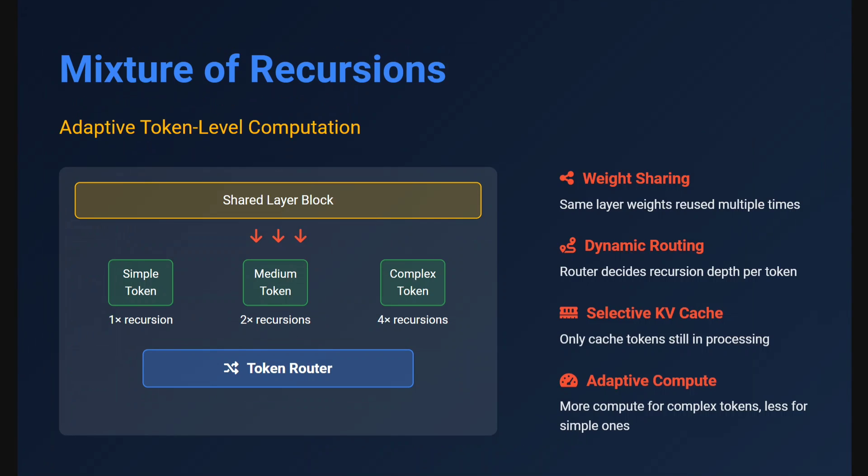Weight sharing happens because you reuse the same layer weights multiple times. Dynamic routing: the router decides the recursion depth per token — a neural network called the token router determines how many times recursion should happen for a given token. Selective KV cache: only cache KV pairs for tokens still in processing. For example, with three tokens — one simple taking one recursion, one medium taking two, one complex taking four — the KV cache for the simple token ends at recursion one. Adaptive compute: more compute is required for complex tokens, less for simpler ones.